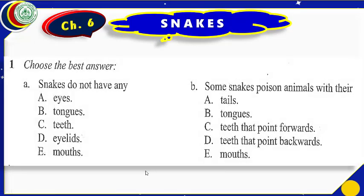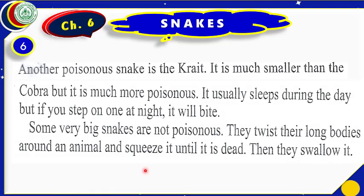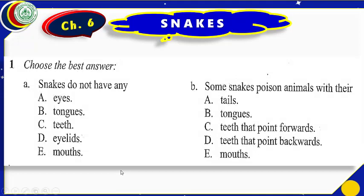Another poisonous snake is the krait. It is much smaller than the cobra but it is much more poisonous. It usually sleeps during the day, but if you step on one at night it will bite. Some very big snakes are not poisonous — they twist their long bodies around an animal and squeeze it until it is dead, then they swallow it.